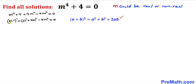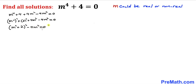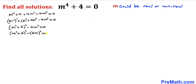Now let's recall the famous identity (a + b)² and apply it to this part. This part can be written as (m² + 2)², and then we write the remaining part minus 4m² = 0. Now let's tweak 4m²: this can be written as (2m)², so the equation becomes (m² + 2)² - (2m)² = 0.